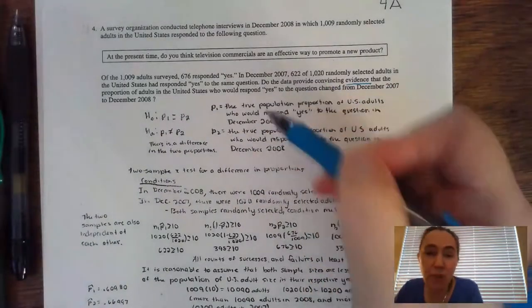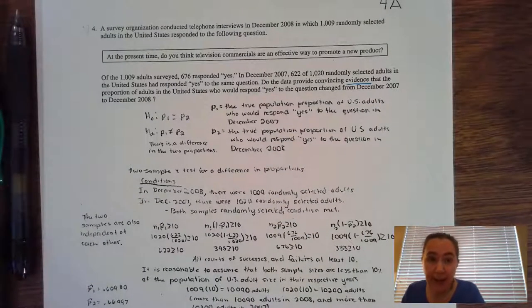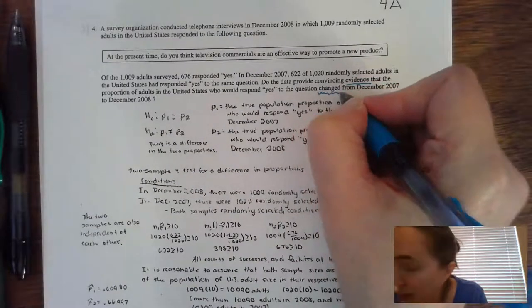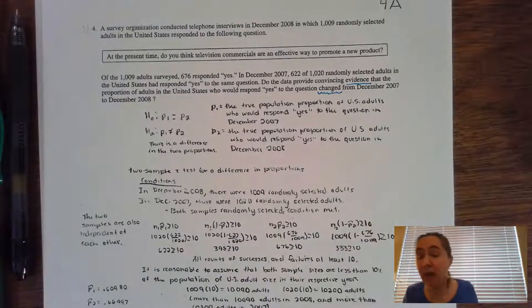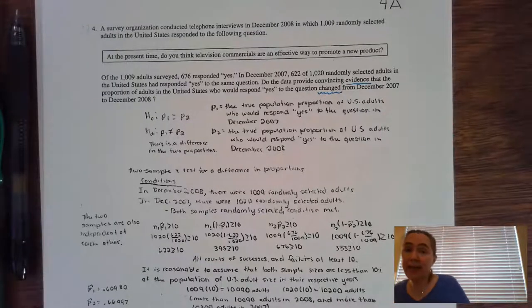You know that there are two groups going on, so you can narrow it down to a two-proportion Z or two-sample T, and we're trying to see if there is evidence of it has changed. Now, the changing means it's different, not too high, too low, changing higher or lower, it just has changed. So I know that this is going to be a two-tailed test.